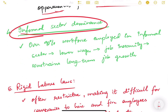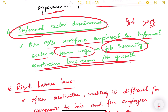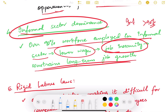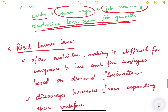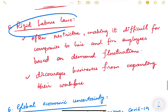Another challenge is informal sector dominance. In India, over 90 percent of the workforce is employed in the informal sector, where workers have lower wages, job insecurity, and face constraints on long-term job growth. This dominance of the informal sector is a major challenge when it comes to creating permanent, good-paying, and secured jobs in our economy.